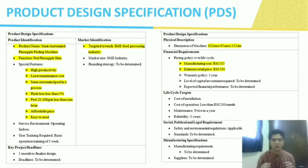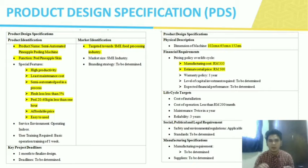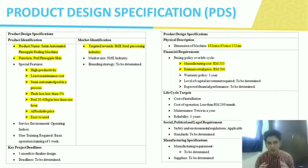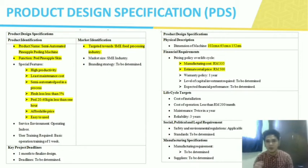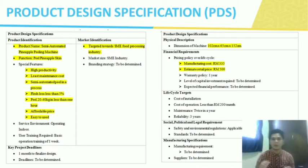We also have a market identification where we target our product to SMI food processing. For the physical distribution, the size of our machine is medium compared to products in the market. The manufacturing cost is RM335, estimated with a selling price of RM500.